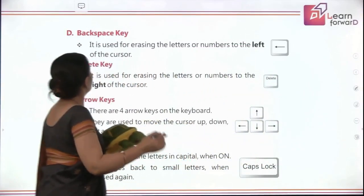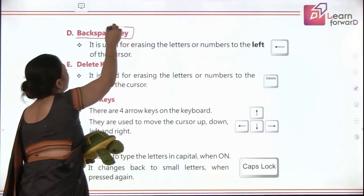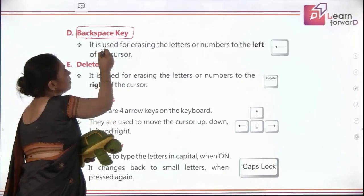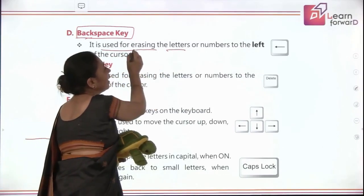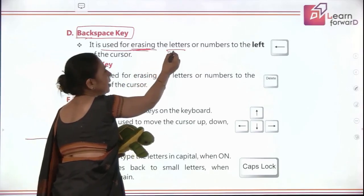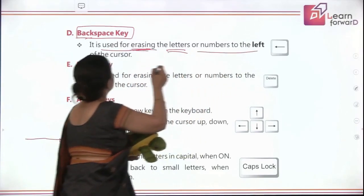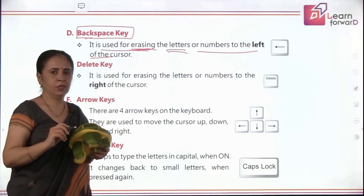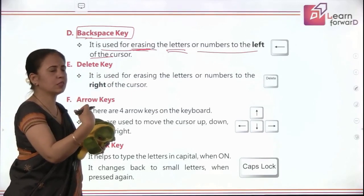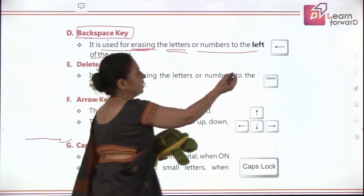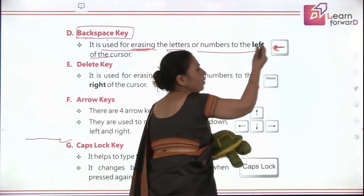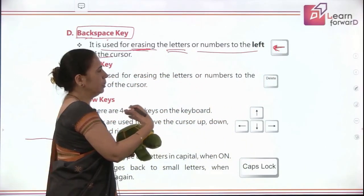Moving further, we come across another key called the backspace key. This backspace key is used for erasing — meaning removing — letters or numbers to the left of the cursor. When you want to delete or remove any letter just to the left of the cursor, you press this backspace key, which has an arrow pointing in the backward direction.